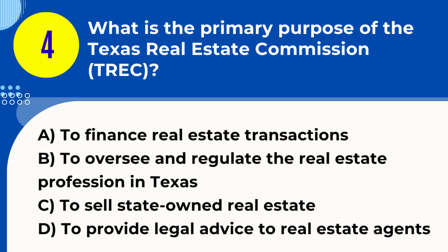Question 4. What is the primary purpose of the Texas Real Estate Commission (TREC)? A. To finance real estate transactions. B. To oversee and regulate the real estate profession in Texas. C. To sell state-owned real estate. D. To provide legal advice to real estate agents. Answer: B. To oversee and regulate the real estate profession in Texas. Explanation: The primary purpose of TREC is to oversee and regulate the real estate profession in Texas, ensuring compliance with laws and protecting consumers.